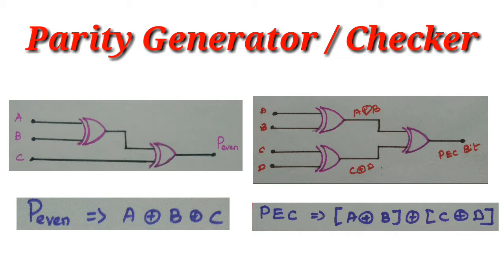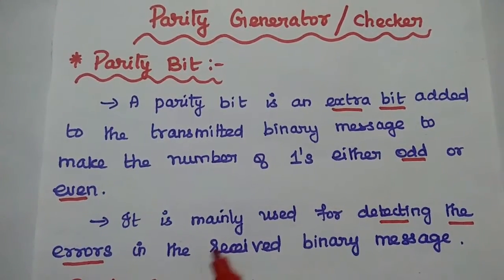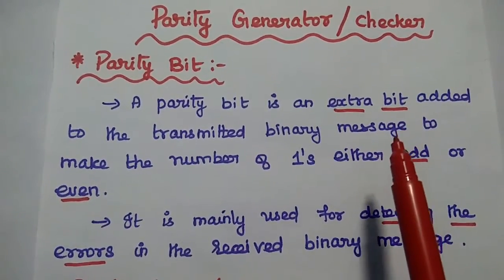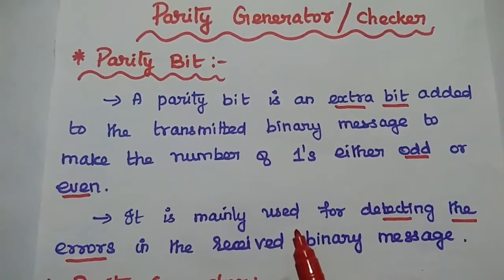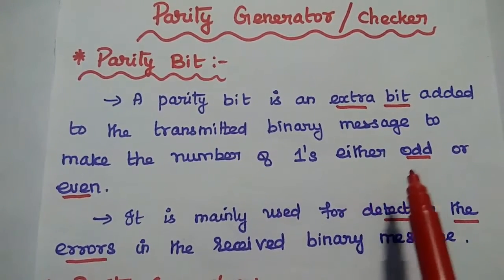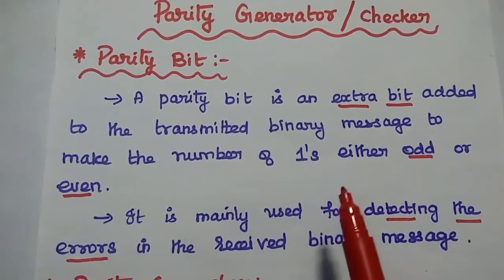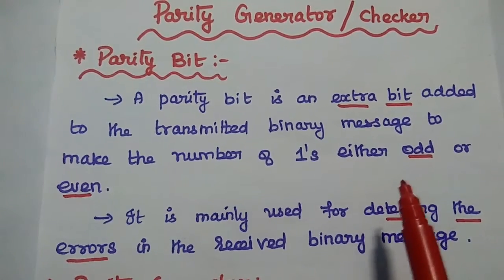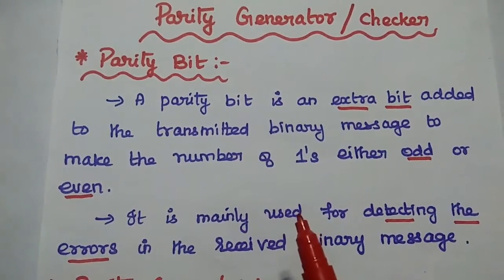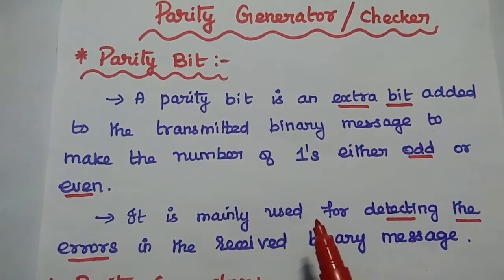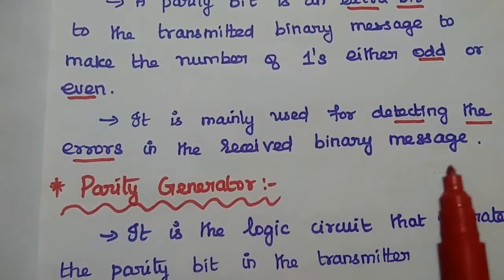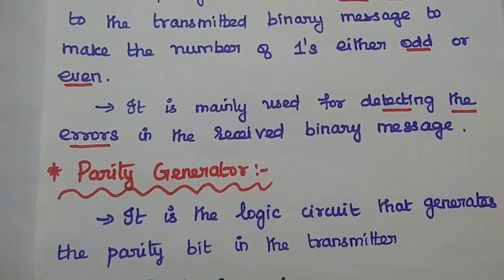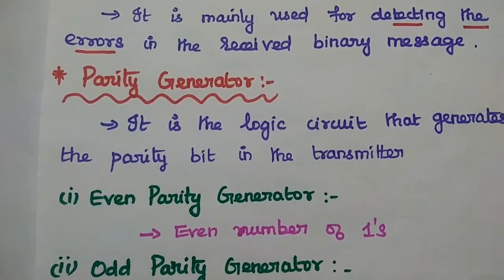Dear students, now we are going to discuss parity generator and parity checker in detail. A parity bit is an extra bit which is added to the transmitted binary message to make the number of ones either odd or even. We do this in order to detect the error signal occurred in the received message signal. This parity bit concept is widely used in digital communication techniques for detecting errors in the received binary message at the receiver side. There are two important concepts related with this parity bit.